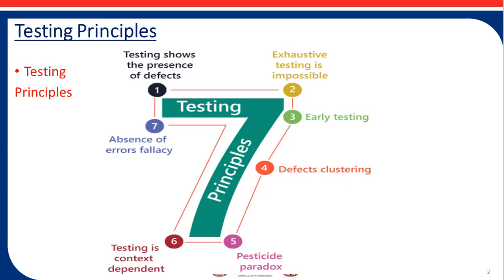The last principle is the absence of error fallacy. Some organizations expect that testers can run all possible tests and find all possible defects. But principles one and two — testing shows the presence of defects, and exhaustive testing is impossible — tell us that this is impossible. Further, it is a fallacy to expect that just finding and fixing a large number of defects will ensure the success of a system. For example, thoroughly testing all specified requirements and finding all defects could still produce a buggy system.